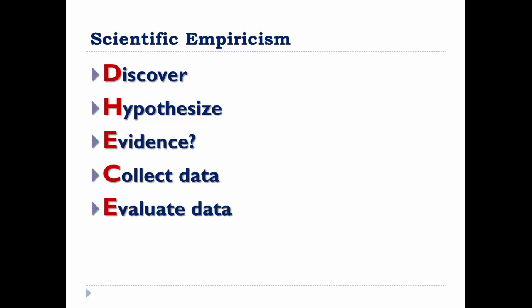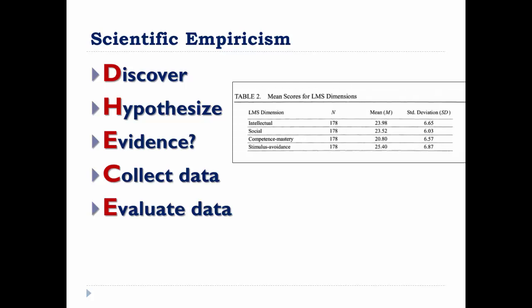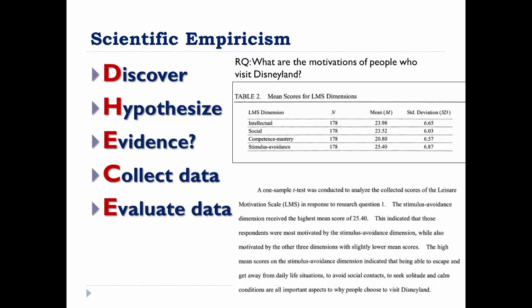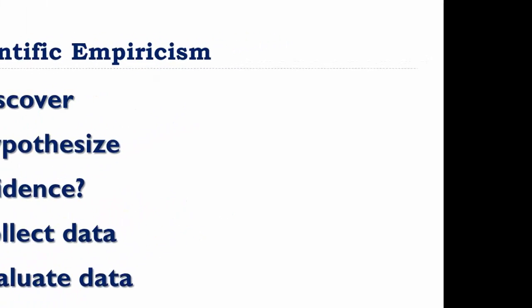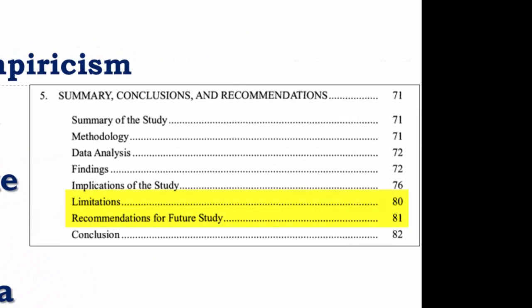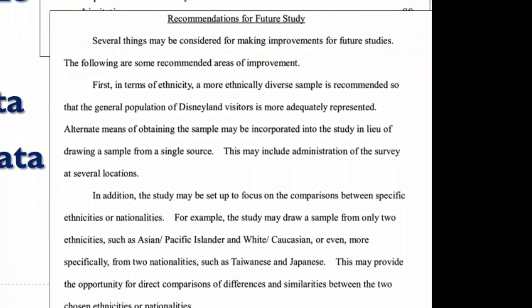Then Su had to analyze and evaluate the data collected, conducting analyses to compare against the research question on Disneyland visitor motivations, and then answer the question and interpret the results. The last step is to defend on the basis of data quality and appropriateness of evaluation. Su noted areas of concern—such as the high proportion of foreign-born Chinese in the study population—which throws into question the generalizability of the results. The final chapter focuses on study limitations and recommendations for future studies.